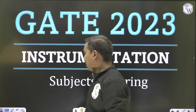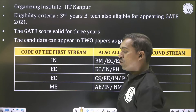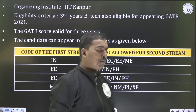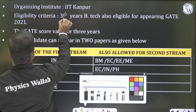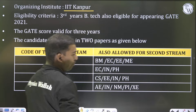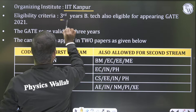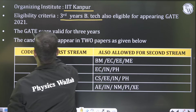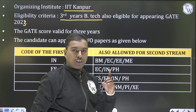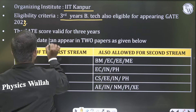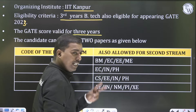For students writing Gate Instrumentation for the first time, here is some basic information: the organizing institute is IIT Kanpur. Third-year B.Tech students are also eligible for appearing in the Gate examination — this has been available since Gate 2021. The Gate score is valid for three years, and a candidate can appear in two papers.